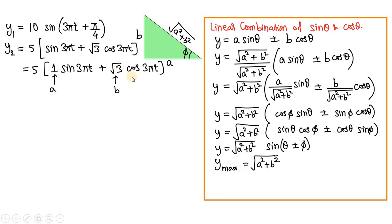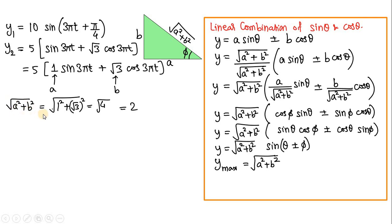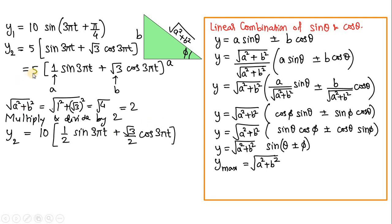We now apply this technique to y2. The bracket quantity can be written as 1·sin(3πt) + √3·cos(3πt), matching the form A sin θ + B cos θ with A = 1 and B = √3. So √(A²+B²) = √(1² + (√3)²) = √(1+3) = √4 = 2. This means we multiply and divide by 2: 2 × 5 = 10 outside, and inside the bracket we get 1/2 and √3/2.